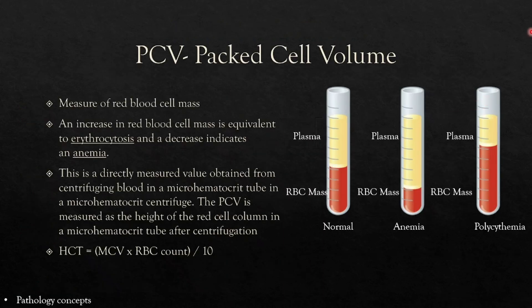Let's learn about packed cell volume (PCV). PCV is a measure of red blood cell mass. An increase in RBC mass is equivalent to erythrocytosis, and a decrease indicates anemia. It is directly measured by centrifuging blood in a micro-hematocrit tube. The PCV is measured as the height of the red blood cell column after centrifugation. In anemia, PCV is reduced and plasma volume is more; in polycythemia, PCV is high and plasma is less. HCT formula: MCV × RBC count / 10.